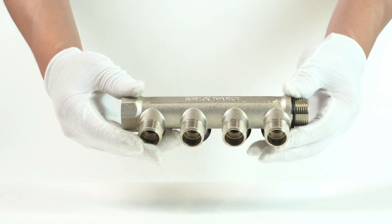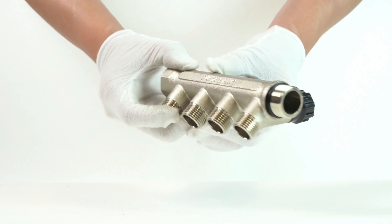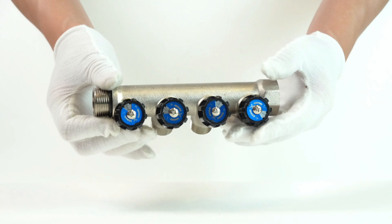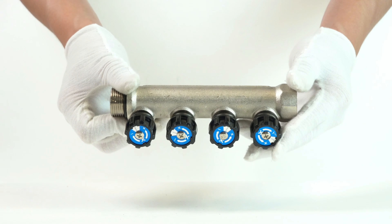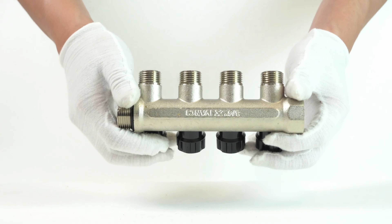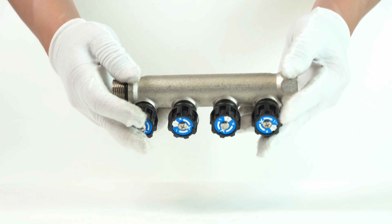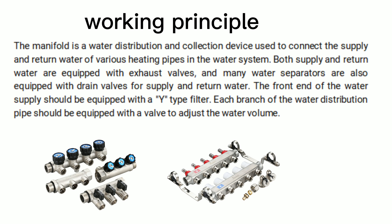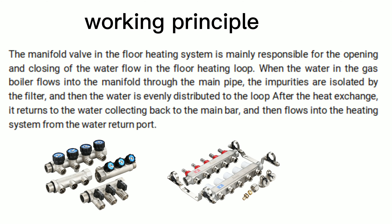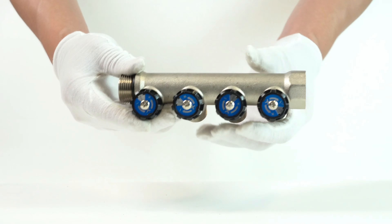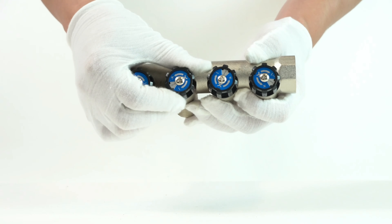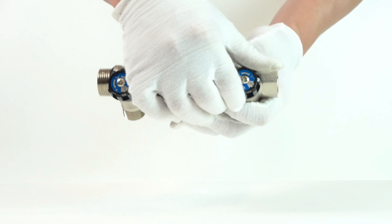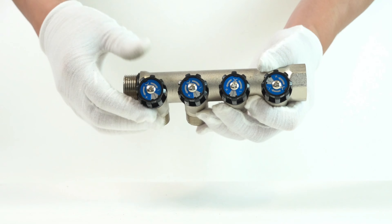Both supply and return water are equipped with exhaust valves, and many water separators are also equipped with drain valves for supply and return water. The front end of the water supply should be equipped with a Y-type filter. Each branch of the water distribution pipe should be equipped with a valve to adjust the water volume.